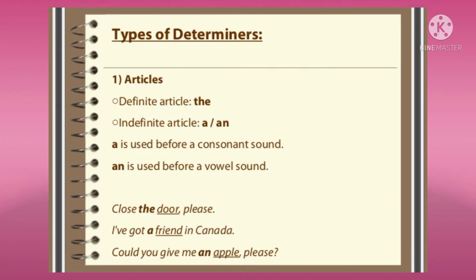The first type of determiners is articles. You already know the articles: 'the' is the definite article, and 'a' and 'an' are indefinite articles. The definite article 'the' points out a particular thing. 'A' is used before consonant sounds and 'an' is used before vowel sounds. Examples: 'Close the door please,' 'How good a friend,' 'Could you please give me an apple.'